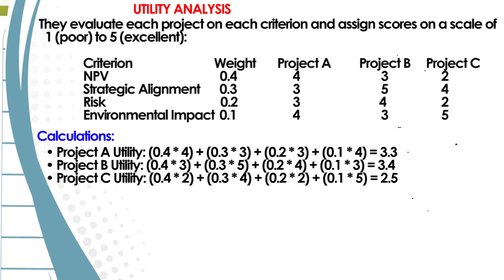Then Project B utility: we take the weight of 0.4 for NPV. Project B utility is 3.4. For Project C, the calculation is: 0.4 times 2 (NPV weight times score), plus 0.3 times 4 (strategic alignment), plus 0.2 times 2 (risk), plus 0.1 times 5 (environmental impact), giving us a total of 2.5.